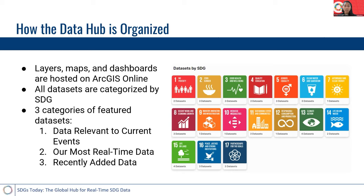The first category is data relevant to current events. Right now we have featured a map on wildfires, a map on armed conflict locations, and a dashboard on the COVID vaccine procurement process. Another category we feature is our most real-time data. We have a dataset on poverty which is updated in real-time, a dataset on coral bleaching events which is updated daily, and air quality which is also updated daily.